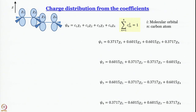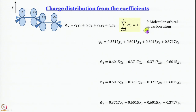Now we determine two important properties of the molecule. First is charge distribution — it may or may not be uniform; for H2 it is uniform, for HF it is not. We use a quantitative method based on atomic orbital coefficients, also used in higher-level quantum chemical calculations with software like Gaussian or Gamess. The key relation is: the sum over n from 1 to 4 of Cin² equals 1, where i is the molecular orbital index and n is the carbon atom number.